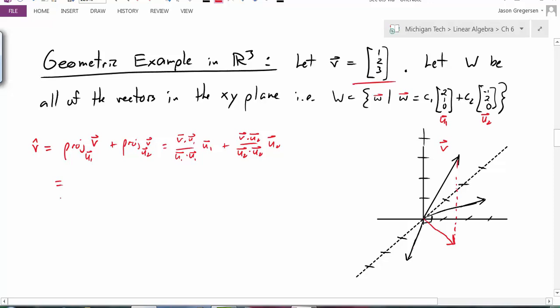If we calculate these pieces, take v dotted with u1, I will get 2 plus 2 plus 2 plus 0. I'll divide that by u1 dot u1, which would be 4 plus 1, and that times the vector u1, which is 2, 1, 0. Plus, now I take v dot u2, which should give me negative 1 plus 4, divided by u2 dot u2, which should be 1 plus 4, times the vector u2, negative 1, 2, 0.